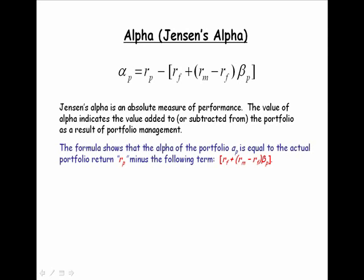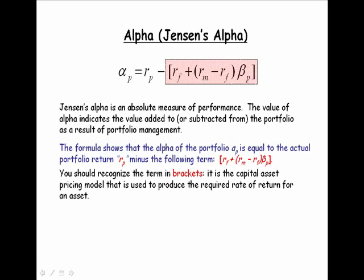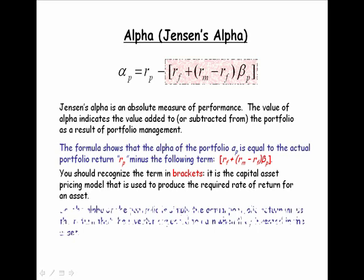The formula shows us that alpha is equal to the actual portfolio return, which is R sub P, minus this term in brackets. I hope that the term in brackets looks familiar to you. It is your friend and mine, the capital asset pricing model. It's the model that we use to determine the required rate of return for an asset.